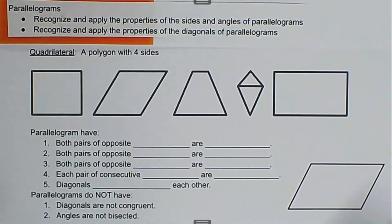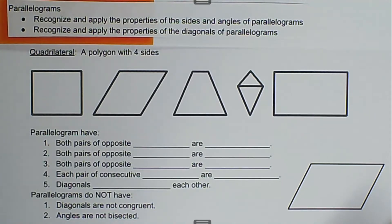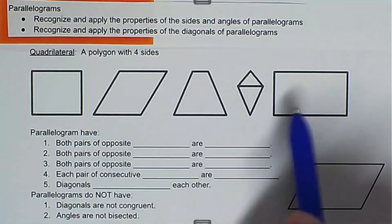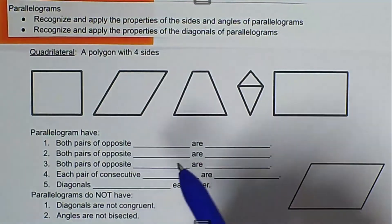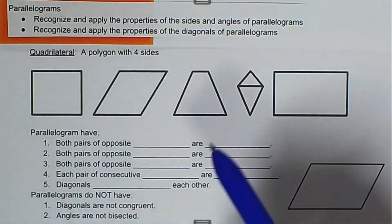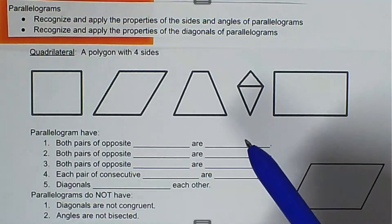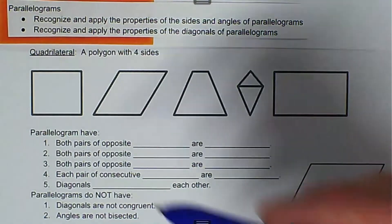First we want to start out with the definition of a quadrilateral. A quadrilateral is a polygon with four sides. Here are some quadrilaterals — specifically, three of these are parallelograms.